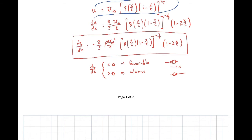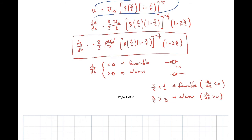To find which section of the plate is favorable and which is adverse, we look at where the pressure gradient expression is less than or greater than zero. Setting it less than zero, you can work through the algebra to find that if x/c < 1/2, the gradient is favorable, and if x/c > 1/2, it's adverse. So the first half of the plate has a favorable pressure gradient and the second half has an adverse pressure gradient.